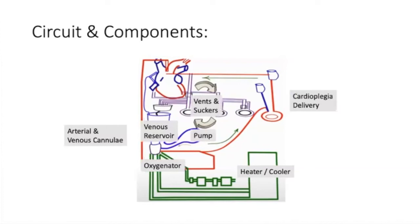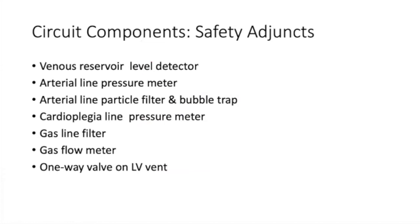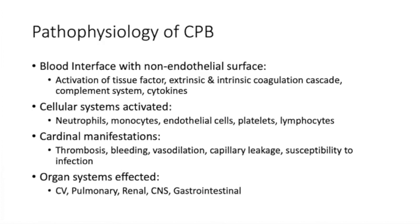With the circuit components described, we'll now discuss the pathophysiology of cardiopulmonary bypass. Blood interfacing with a non-endothelialized surface activates clotting factors, the complement system, and cytokines, inducing manifestations that include both thrombosis and bleeding risk, vasodilation, diffuse capillary leakage producing a picture similar to distributive shock, and susceptibility to infection. There are widespread organ system effects including myocardial edema, decreased contractility, arrhythmogenicity, platelet dysfunction, and factor consumption.